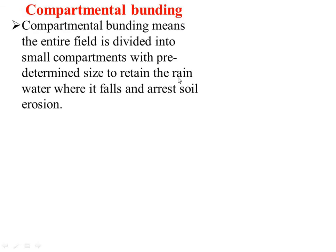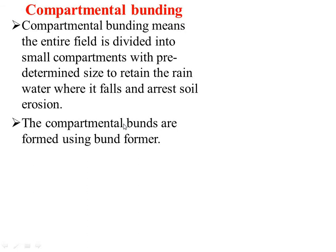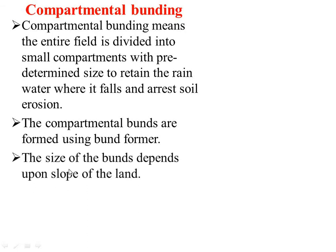Compartmental bunding is a method where the entire field is divided into small compartments with a predetermined size to retain rainwater where it falls and arrest soil erosion. The compartmental bunds are formed using a bund former, and the size of the bunds depends on infiltration into the soil to help conserve soil moisture.